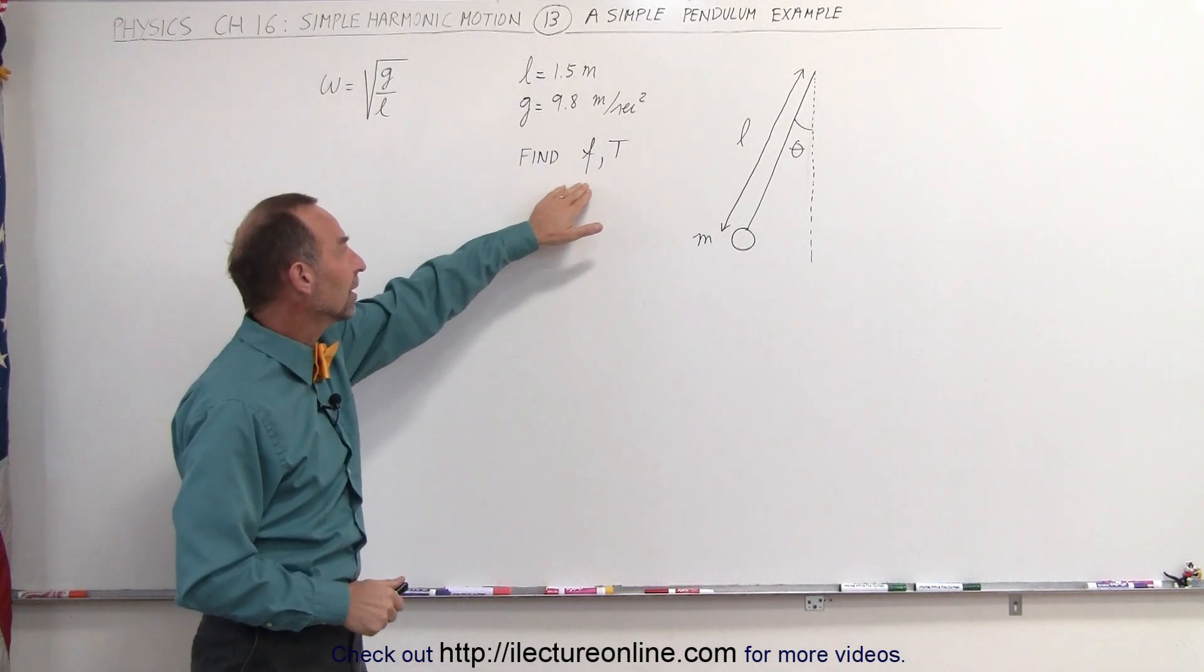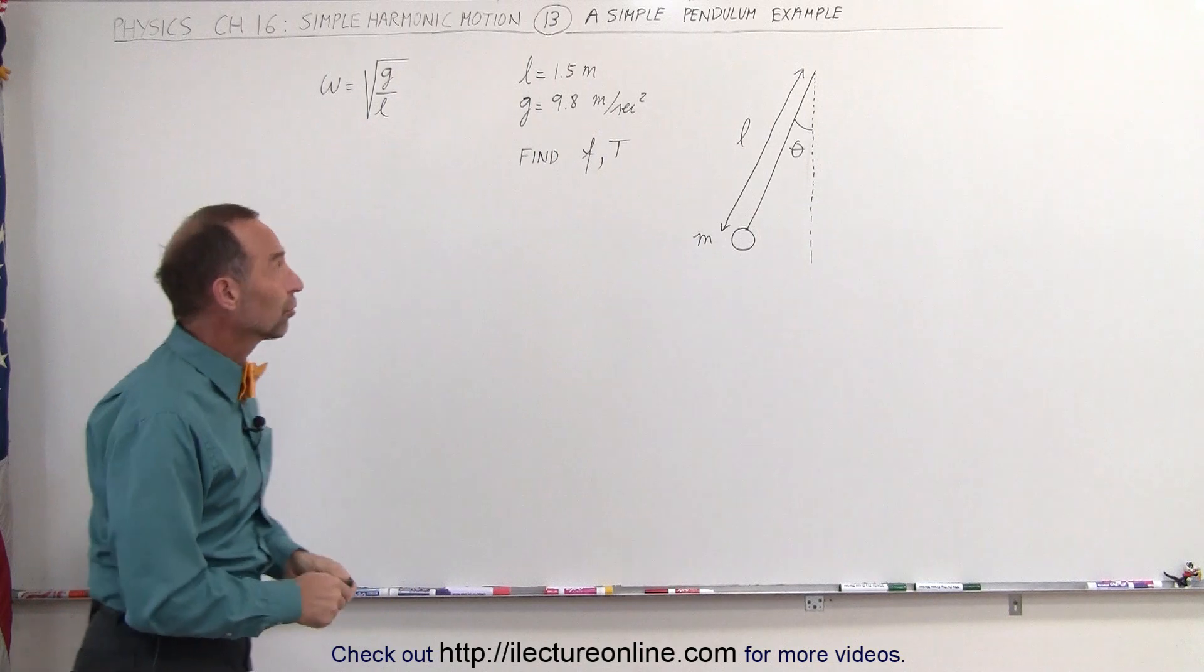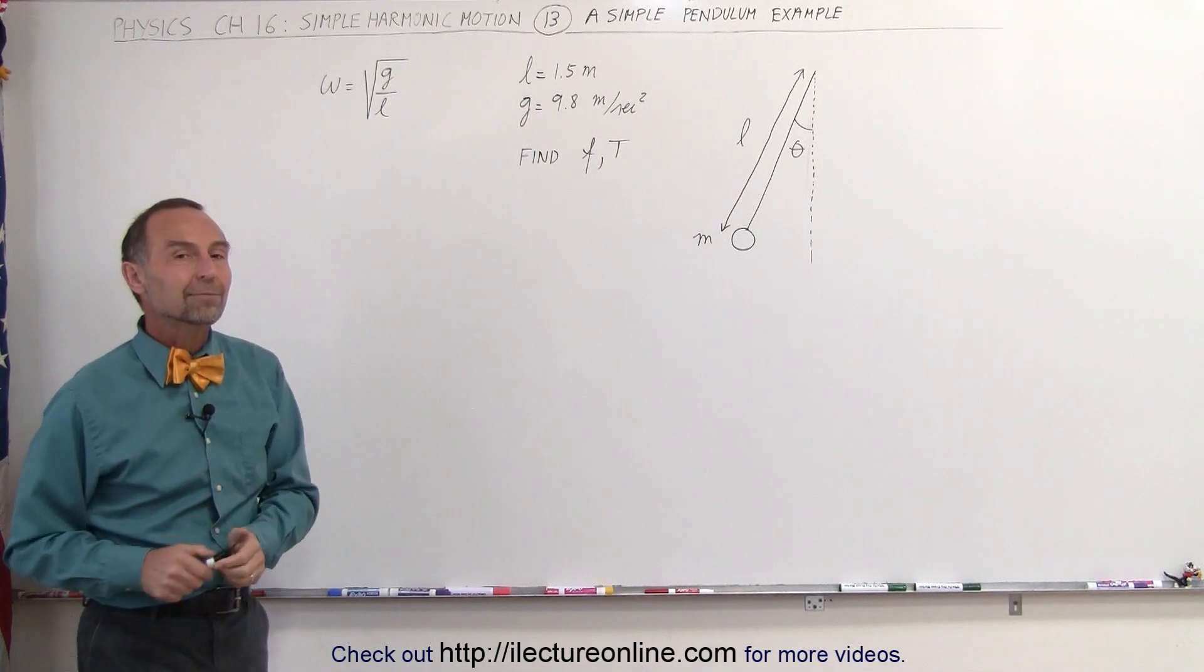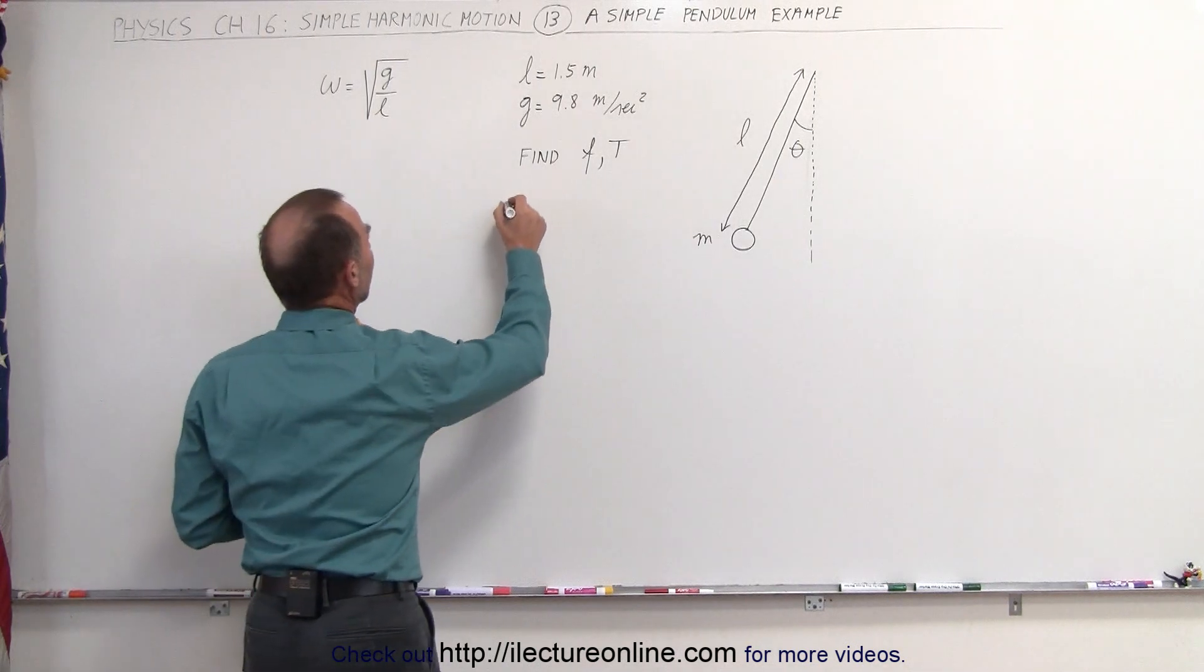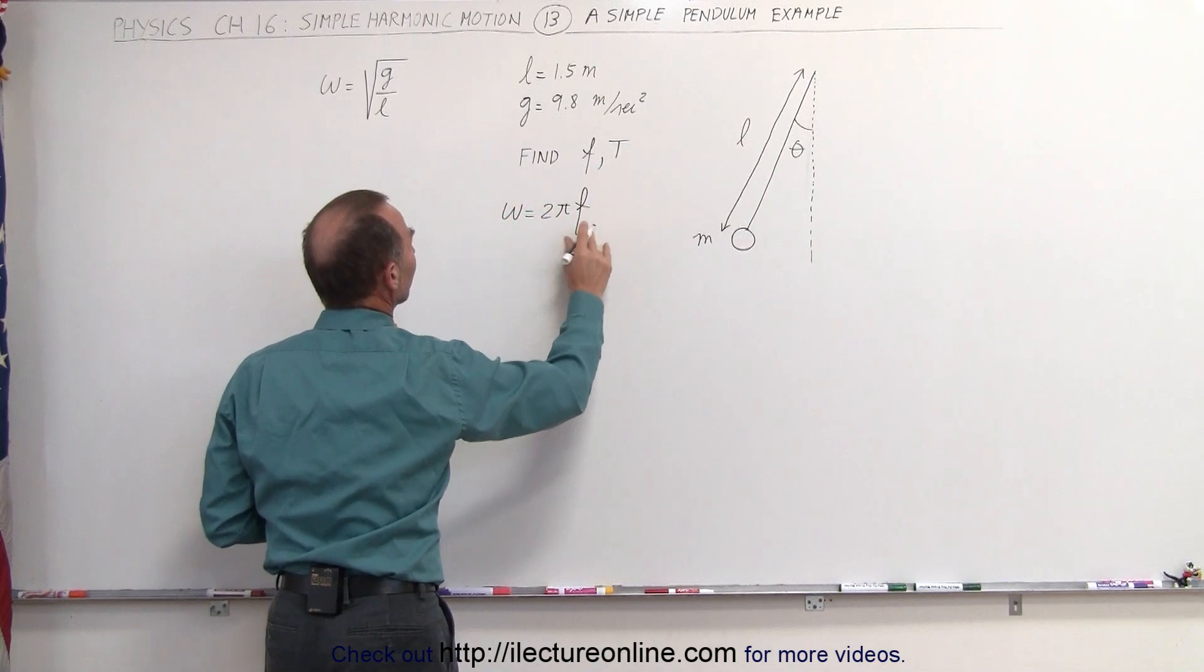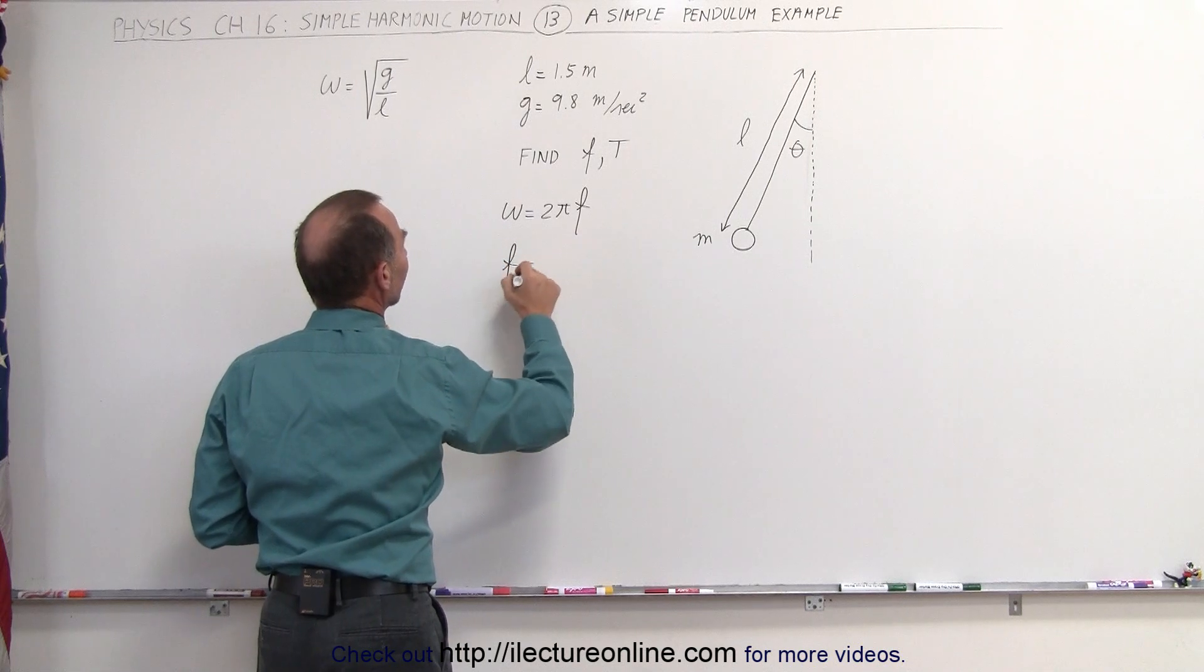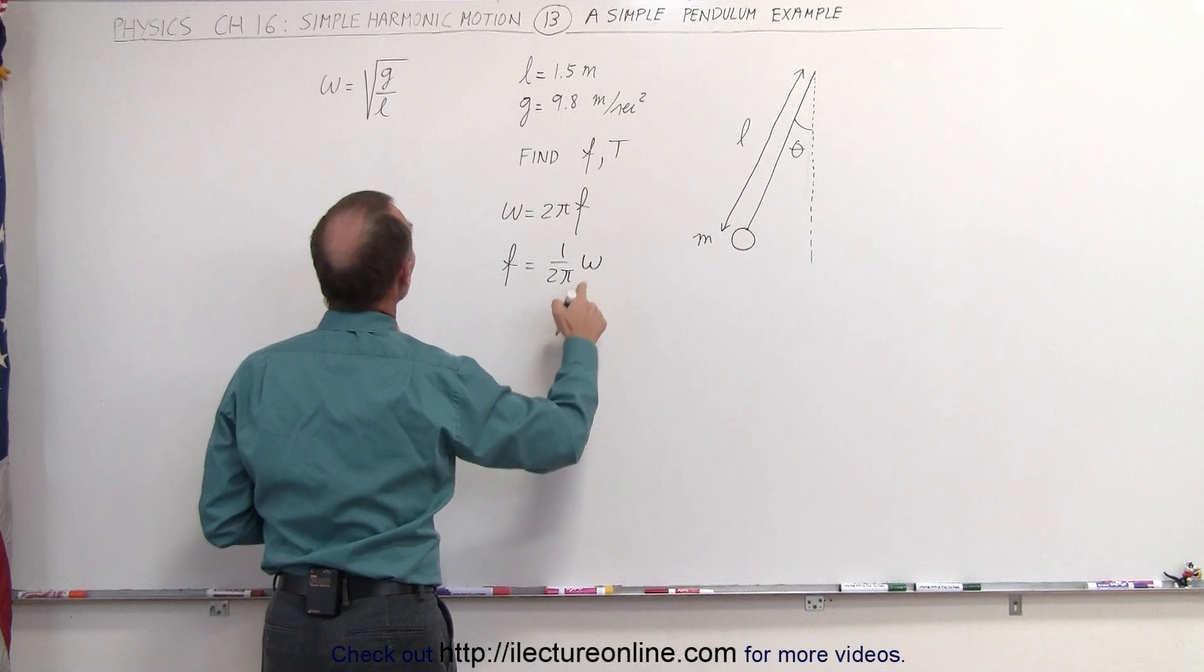We're trying to find the frequency and the period when the length is 1.5 meters, and assuming we're on the surface of the earth with g equals 9.8 meters per second squared. Since we know that omega is equal to 2 pi times the oscillatory frequency, we can then say that the frequency is equal to 1 over 2 pi times omega.